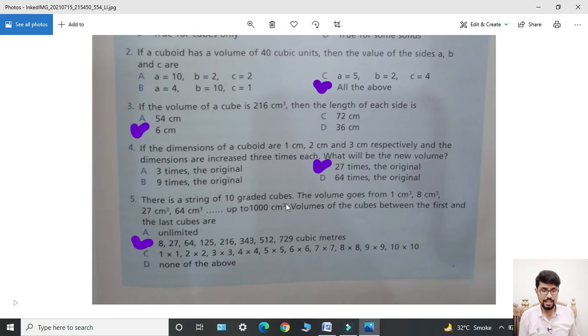Fifth: There is a string of 10 graded cubes. The volumes go from 1 cm cube, 8 cm cube, 27 cm cube, 64 cm cube, up to 1000 cm cube. The volumes of the cubes between the first and the last cube are 8, 27, and 64.